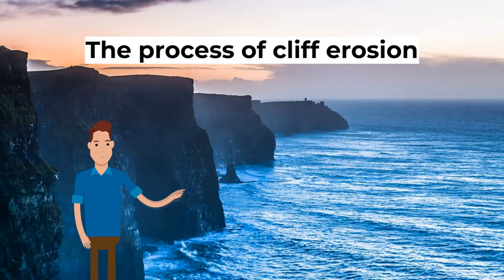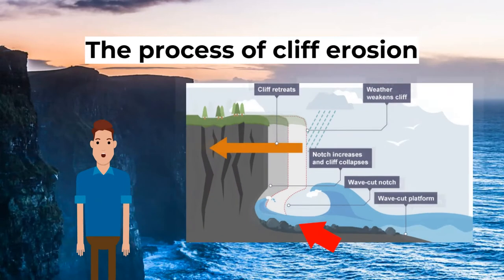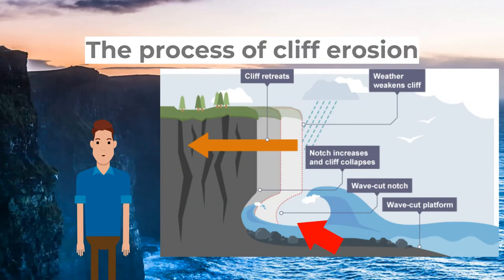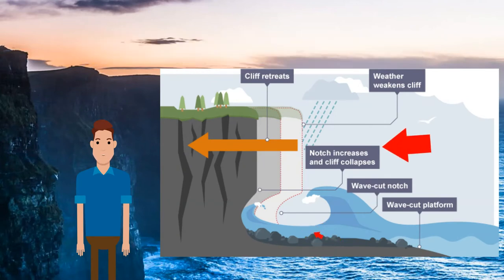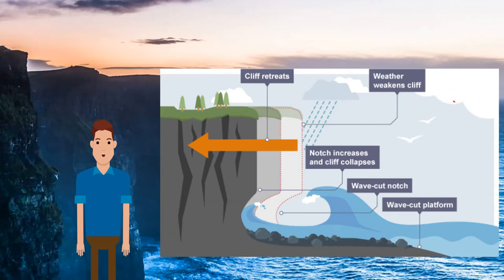Let's look at the process of cliff erosion. The sea attacks the base of the cliff, forming a wave-cut notch. The notch increases in size, and weathering weakens the cliff, which causes it to collapse. The backwash carries the rubble towards the sea, forming a wave-cut platform — the bedrock left behind as the cliff moves backwards. The process repeats and the cliff continues to retreat.